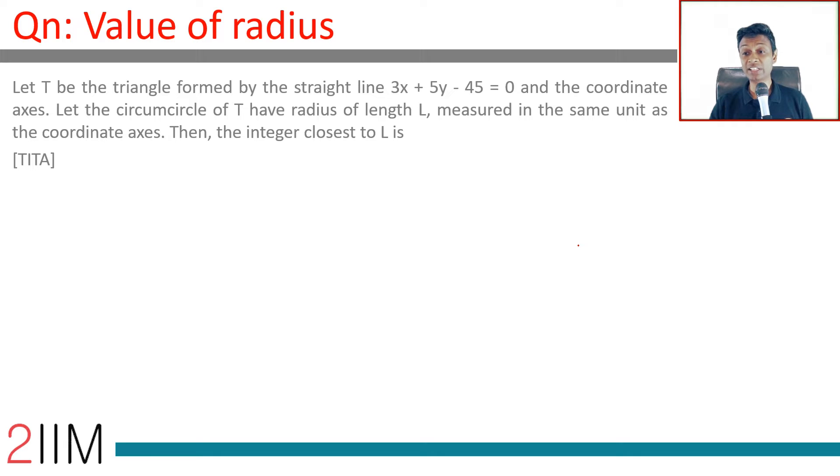Let T be the triangle formed by the straight line 3x plus 5y minus 45 equal to 0 and the coordinate axes.